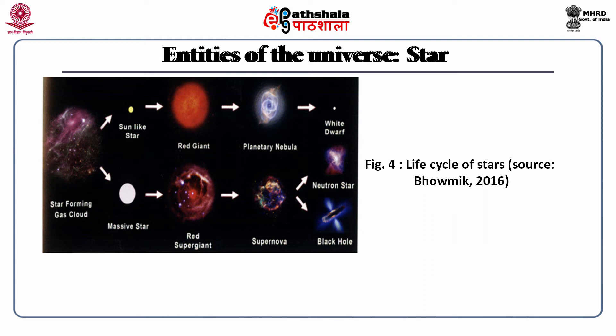Big stars die faster. They first form red supergiants — a helium core surrounded by an expanding shell of gas — followed by formation of heavier elements at the core through nuclear fusion. Iron is produced at the core when the temperature exceeds 5 billion degrees. The iron core crashes to a size as low as 10 to 20 kilometers in diameter, then vanishes in a fraction of a second with a huge explosion visible from many light years away. This phenomenon is called a supernova.